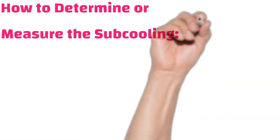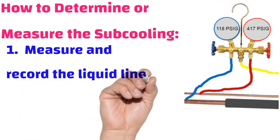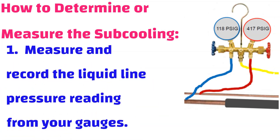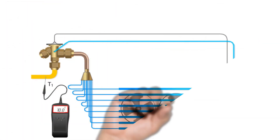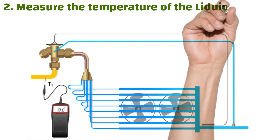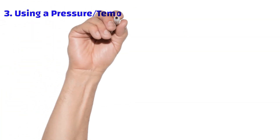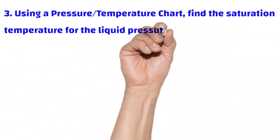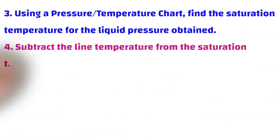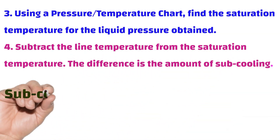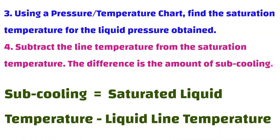How to measure sub-cooling: one, measure and record the liquid line pressure reading from your gauges; two, take the temperature of the liquid line after the condenser or before the expansion device; three, use a PT chart to find the saturation temperature for the liquid pressure obtained; four, subtract the liquid line temperature from the saturation temperature — the difference is the amount of sub-cooling. Sub-cooling equals saturated liquid temperature minus liquid line temperature.